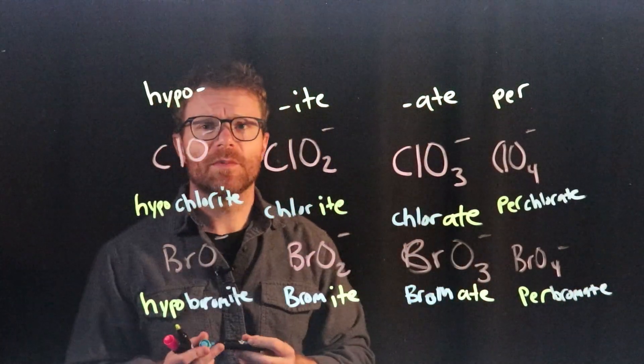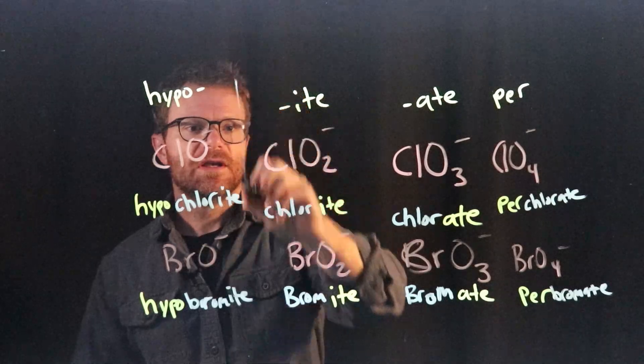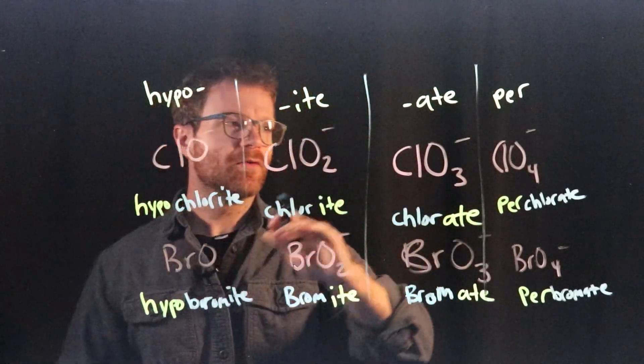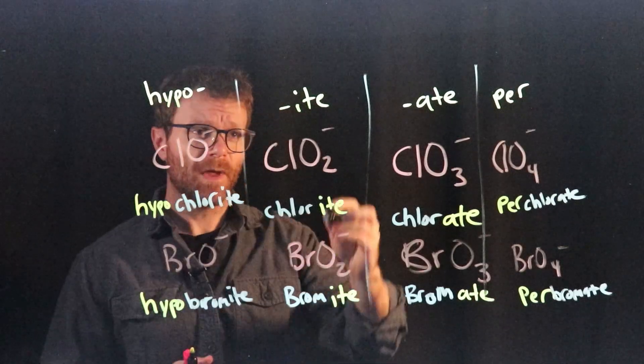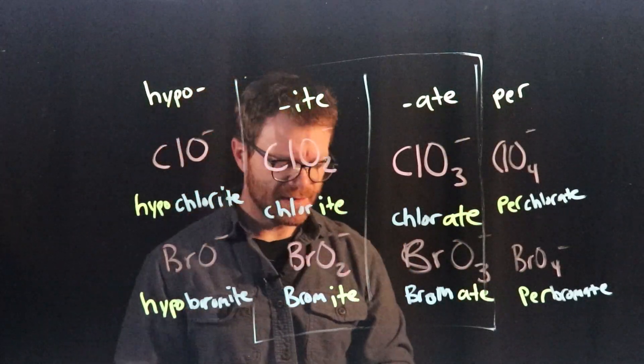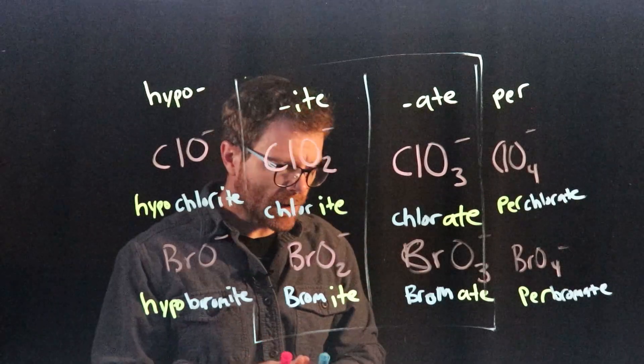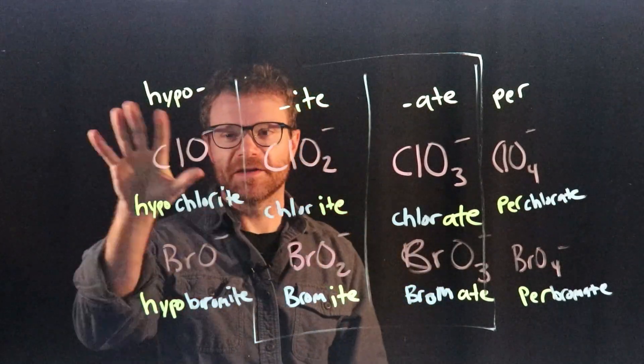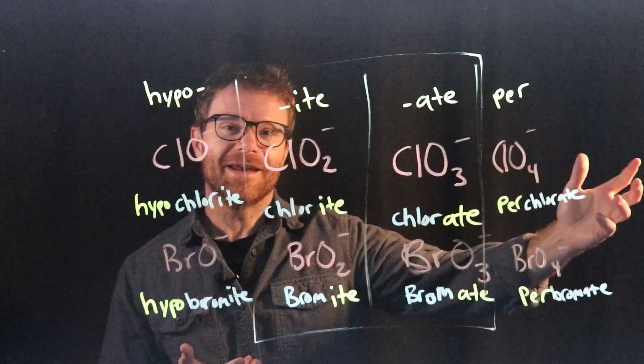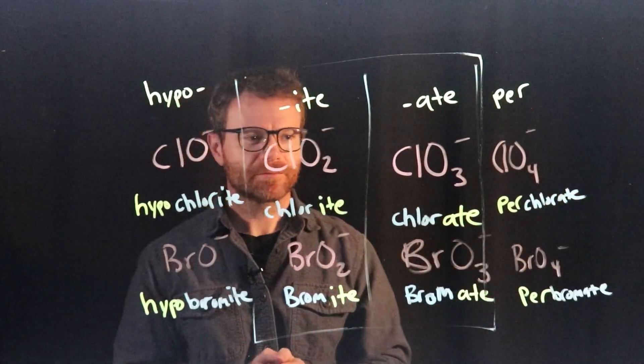So, this might not come up in your chemistry class at all. But later on in chemistry, we have so many polyatomic ions, you'll start to see hypo things and per things. Again, I ask my students just to focus on these two middle columns, -ite and -ate. But, you could keep your eyes out for things like hypochlorite or permanganate or things like that.